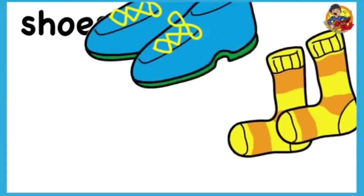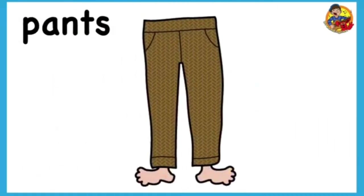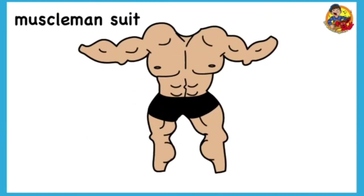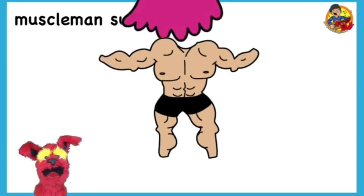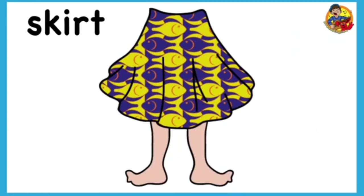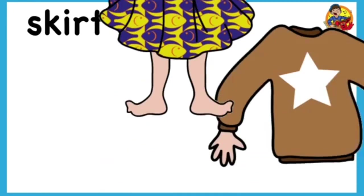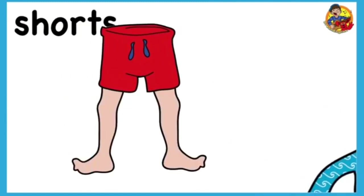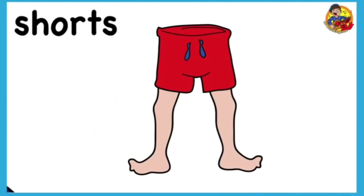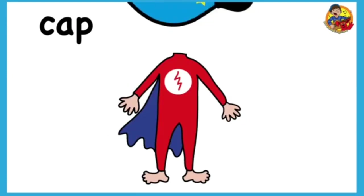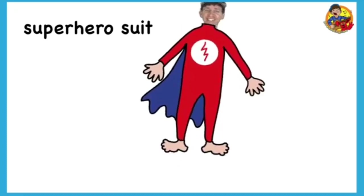Now let's look at different types of clothing: socks, shoes, pants, t-shirt, muscle man suit — that's funny! — dress, jeans, skirt, sweater, pajamas, shirt, shorts, sweatshirt, cap, and superhero suit.